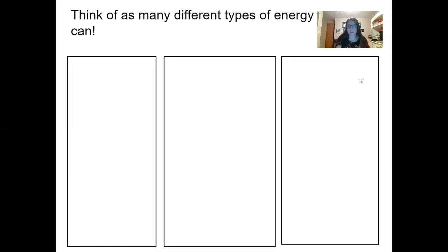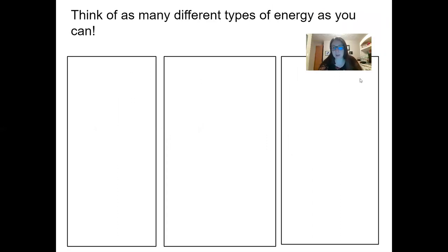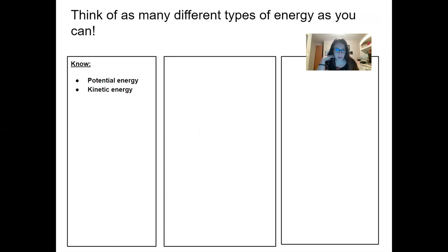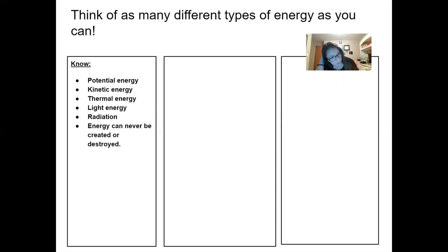I usually start this unit by asking for as many different types of energy as you can name, and usually people have a lot of ideas because the seventh grade science teachers did a really good job teaching you. So the first one that usually gets thrown out is potential energy. Kinetic energy also gets thrown out, thermal energy, light energy, radiation. We also kind of know already that energy can never be created or destroyed — hopefully you've heard of the law of conservation of energy.